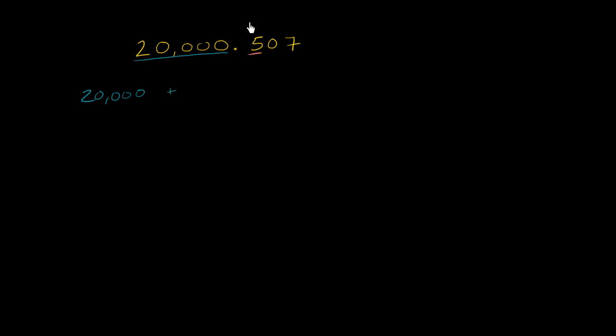Well, we have 5 tenths. This is the tenths place. So we could literally write that as 5 tenths. Then we have 0 hundredths. I'll write that as a hundredths place just so that we can keep track of it. And then finally, we have 7 thousandths.